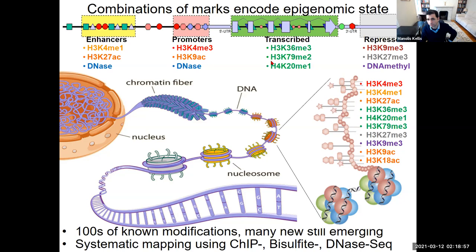Transcribed regions are marked by H3K36 trimethyl, K79 trimethyl, and H4K20 monomethyl. Repressed regions are marked by one of three signatures: DNA methylation (repressing most regulatory regions), H3K27 trimethylation (polycomb or facultative repression, which shuts on and off more rapidly), and H3K9 trimethylation (marking stable heterochromatin repression of large genomic regions).